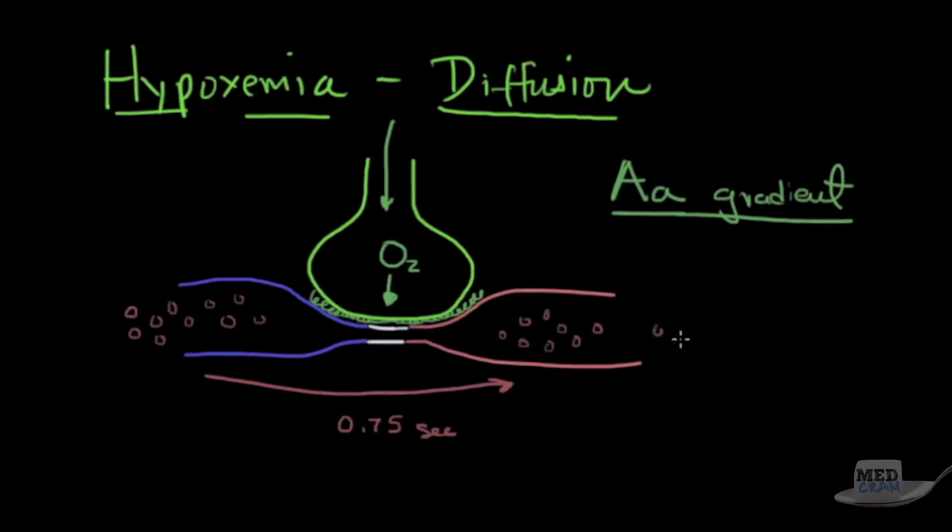However, when they start to exercise, cardiac output goes up, and even though there are parallel systems that the blood can go through, the velocity of these red blood cells increases. Therefore, the 0.75 seconds goes down.